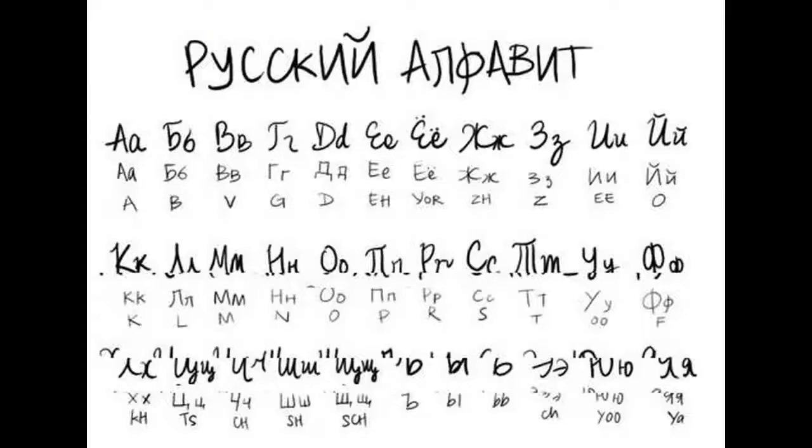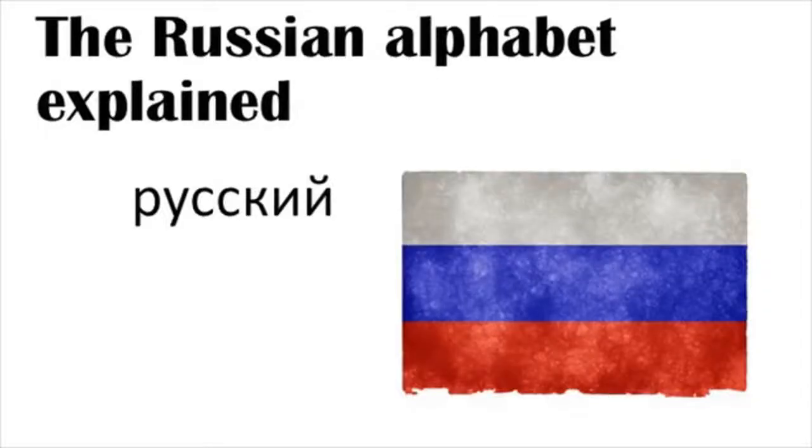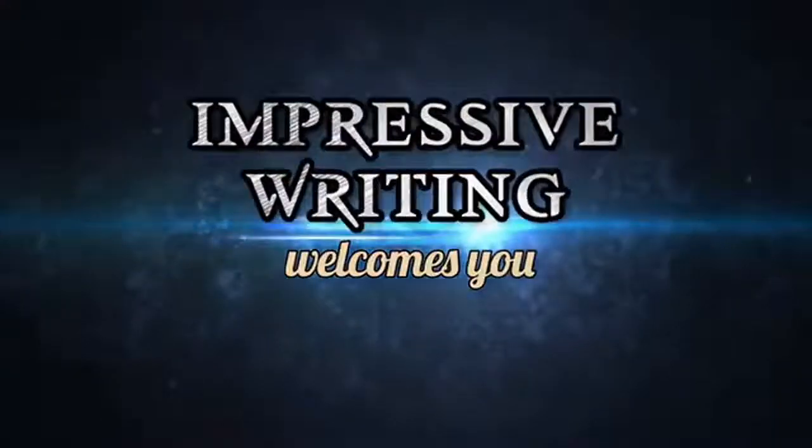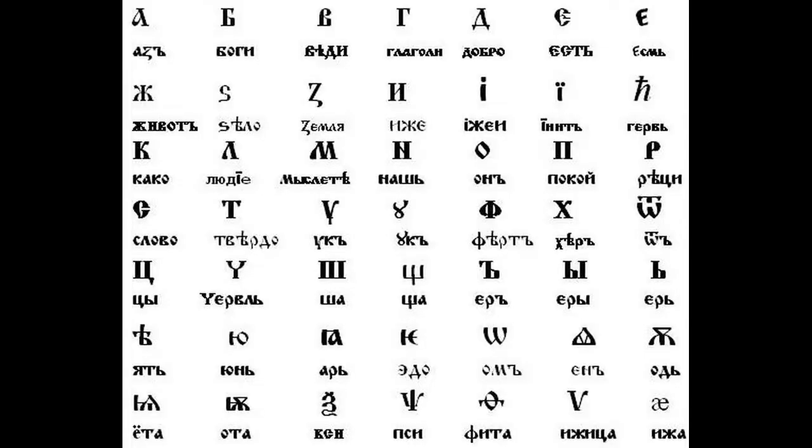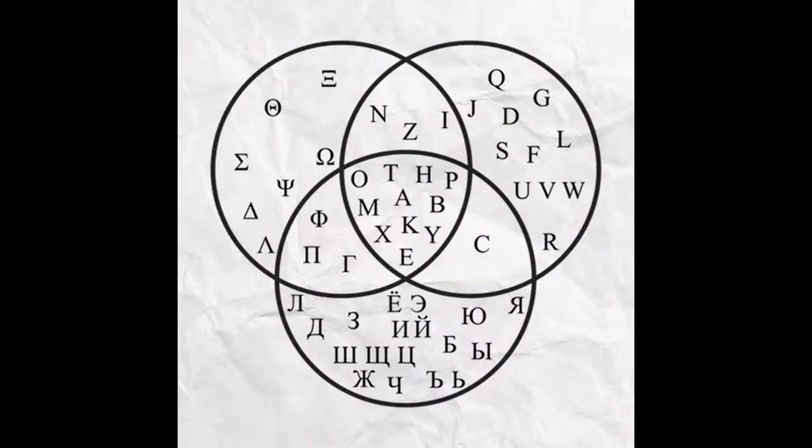The Belarusian alphabet displays the following features: GE represents a voiced velar fricative. Yo, also known as the dotted I or decimal I, resembles the Latin letter I. Unlike Russian and Ukrainian, it is not used.